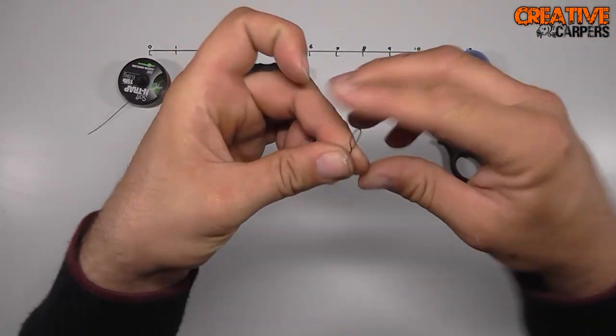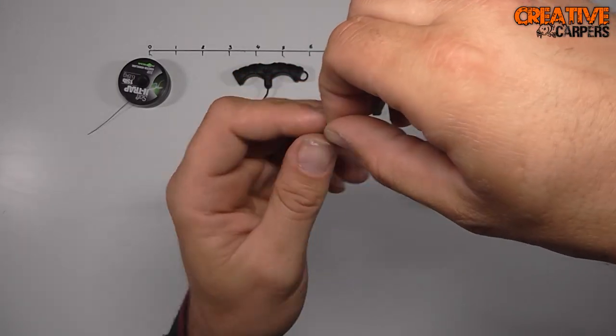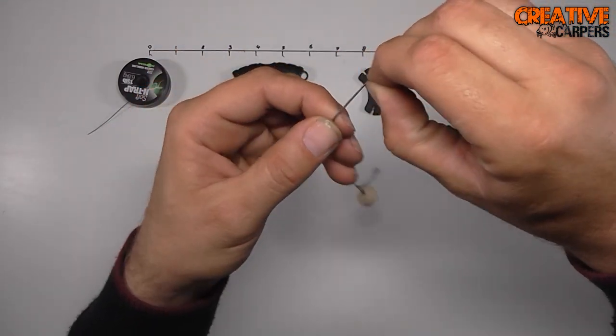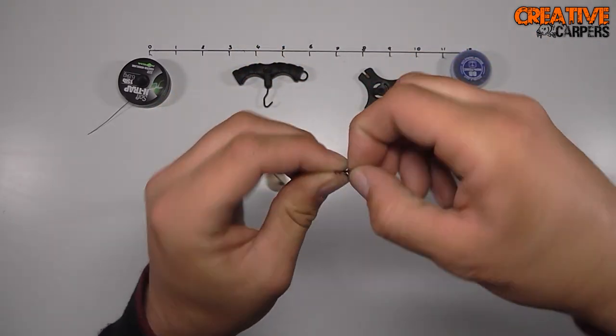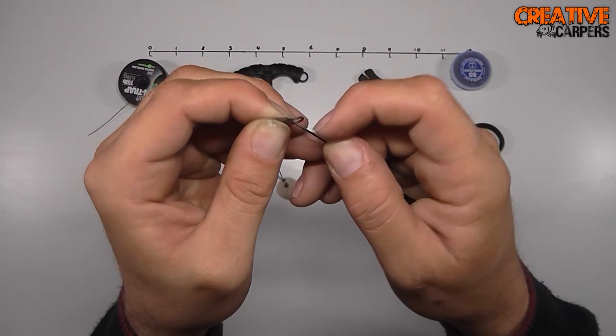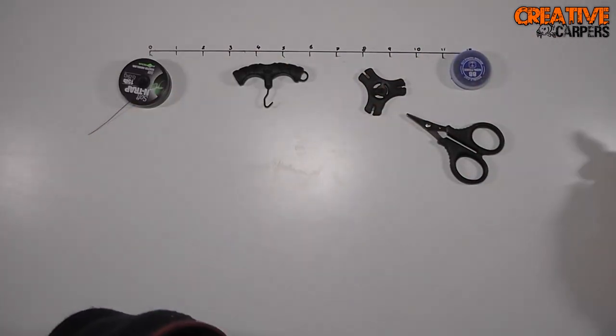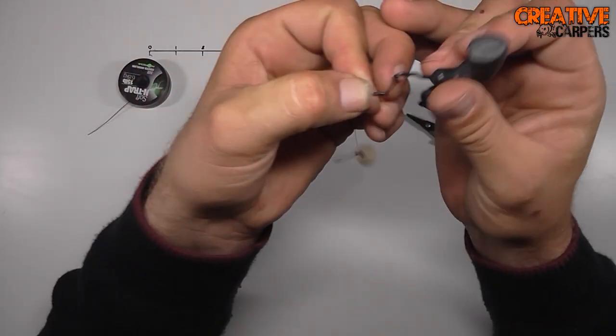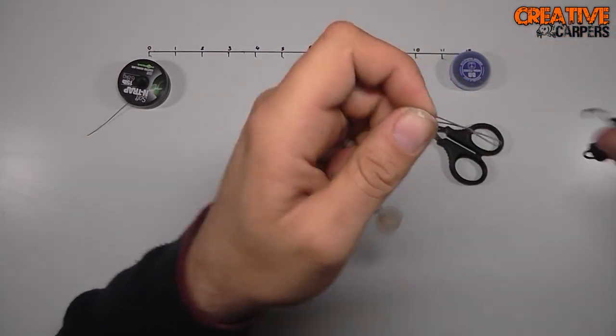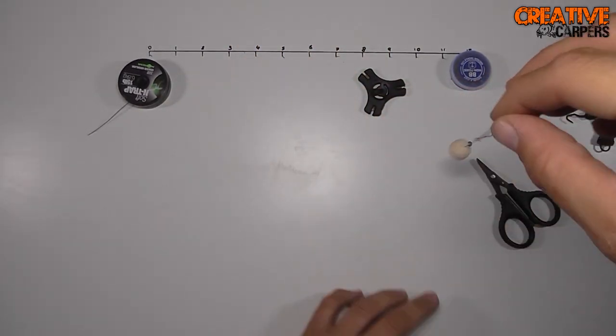At the other end you'll tie yourself a figure of 8 loop knot, and this is just to connect it to your leader. Pretty easy rig to tie to be fair. Just pull that down, pull it through. Always remember to moisten your knot, and then you take your puller tool just to bed that knot down like that. Trim that tag end off, and there we are, that is one KD rig ready to go out and catch some fish.